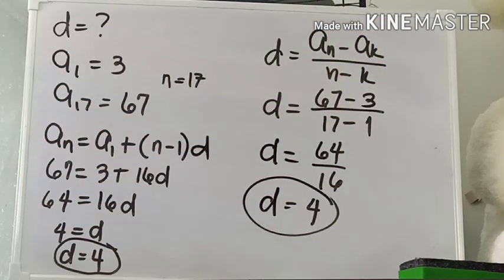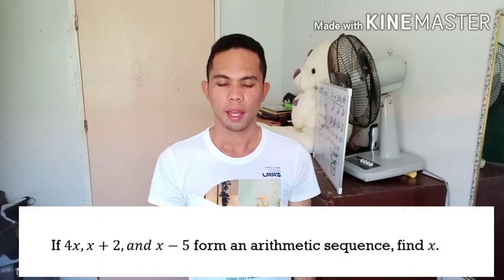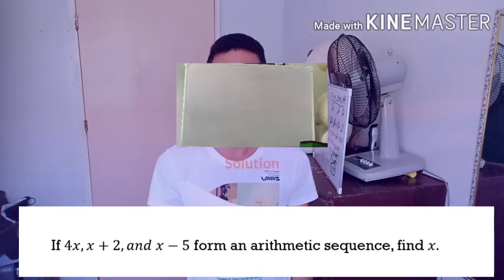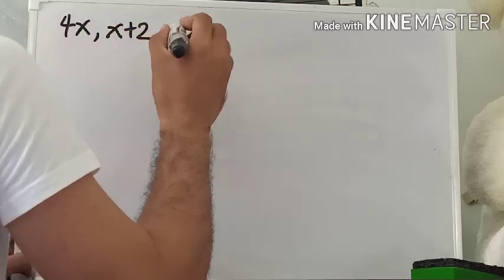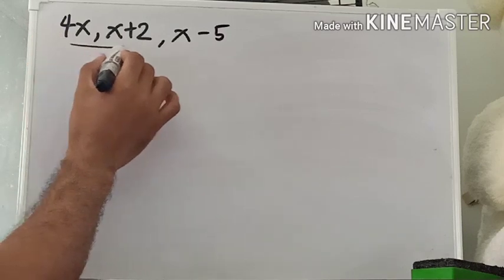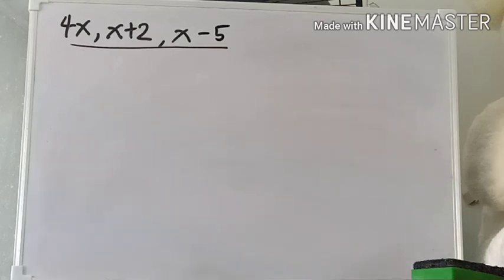For our last problem: if 4x, x + 2, and x − 5 form an arithmetic sequence, find x. When sequences are expressed using variables, the best approach is to create a working equation. In an arithmetic sequence, the difference between consecutive terms is constant, so the difference between the second and first terms equals the difference between the third and second terms.